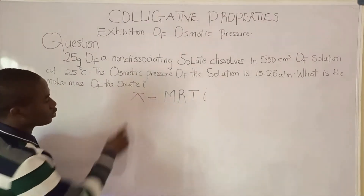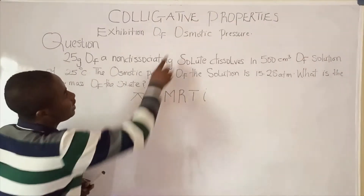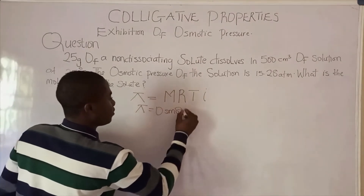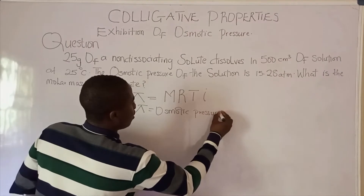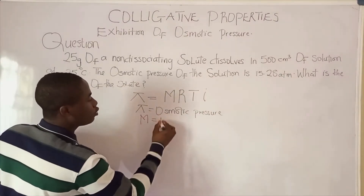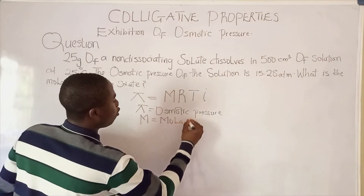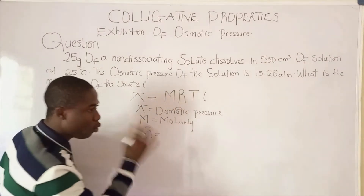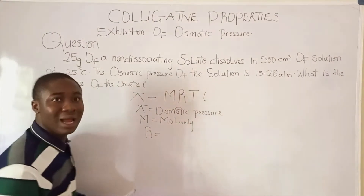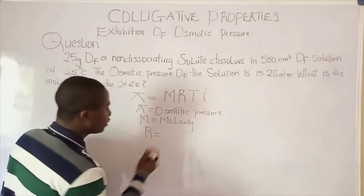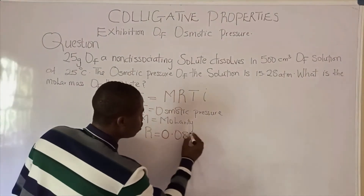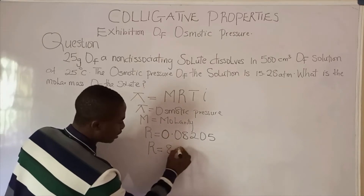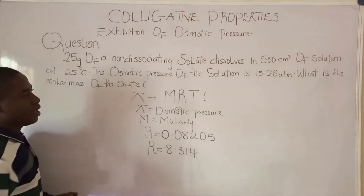Pi signifies the osmotic pressure, and N is called Molarity. R is called the Molar Gas Constant, and the Molar Gas Constant has different values — we're talking about 0.08205, and sometimes you can be given 8.314. T is Temperature in Kelvin.